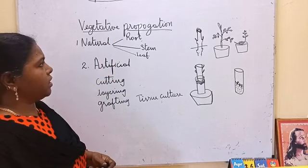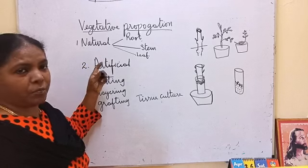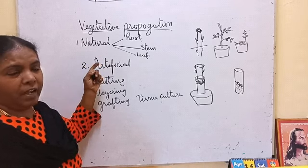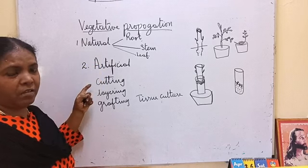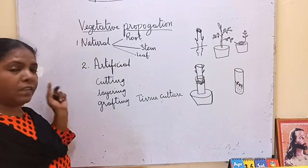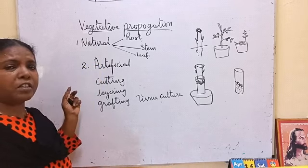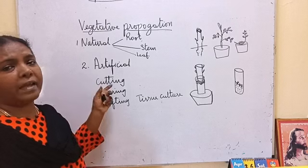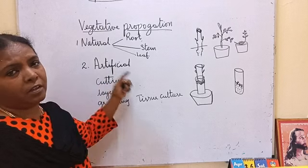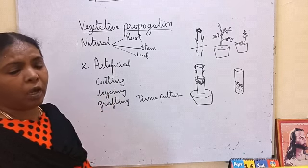With this we are finishing asexual reproduction. Next, we are going to see sexual reproduction in plants and human beings.